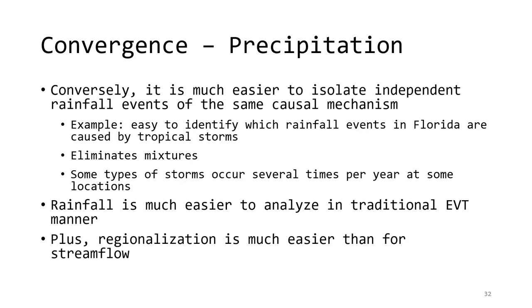In precipitation frequency analysis, it's becoming more common practice to try to isolate the mechanisms that create precipitation events. It still requires expertise to perform a storm type separation, but it can be simpler and more straightforward than in the streamflow case. Rainfall is much easier to analyze in a traditional extreme value theory manner, which is why precipitation frequency analysis tends to rely on it more than streamflow frequency. Plus, as we'll see in a coming topic, regionalization is easier for precipitation than for streamflow.